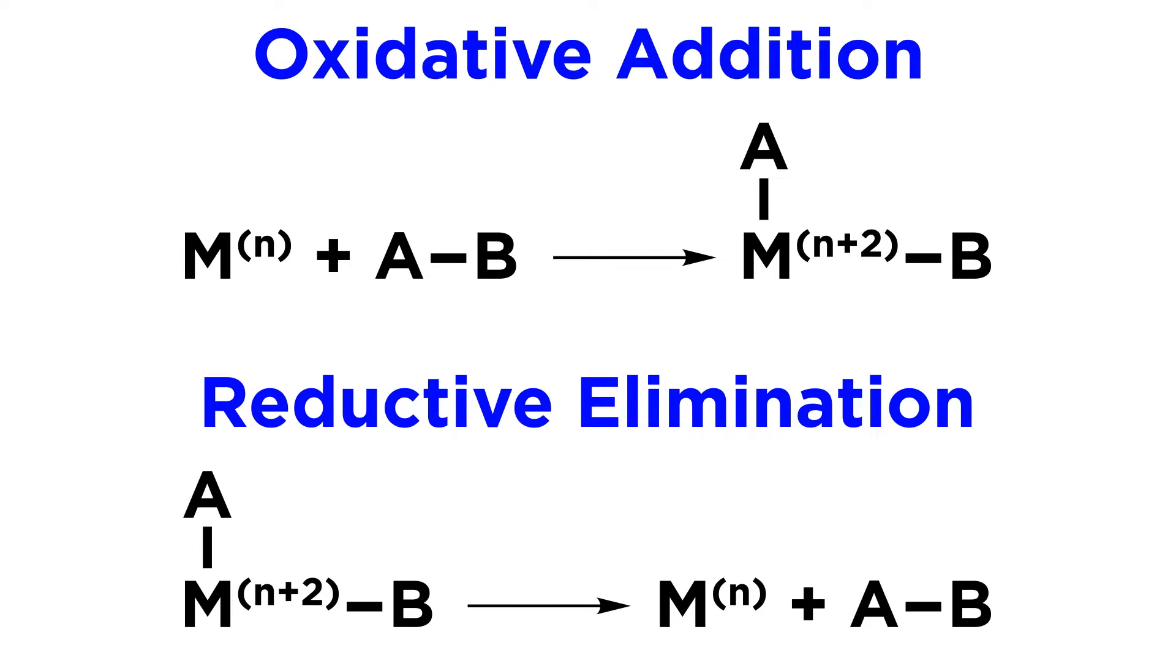To see what this reaction accomplishes, we can truly just take the generalized equation for oxidative addition and reverse it, so that the complex with ligands A and B and the metal in the N plus 2 oxidation state is now the reactant, and this will reduce to the metal in the N oxidation state while also yielding AB.